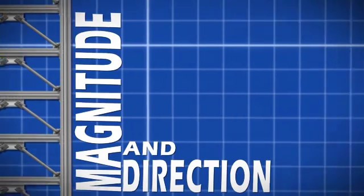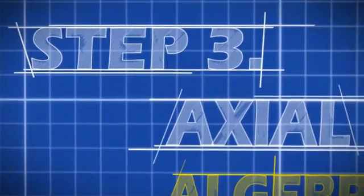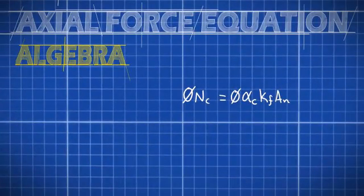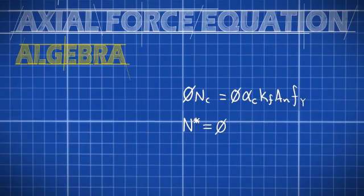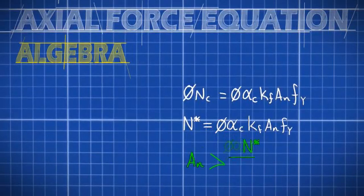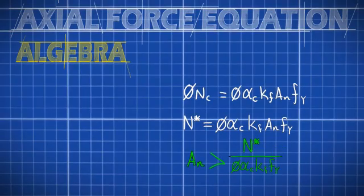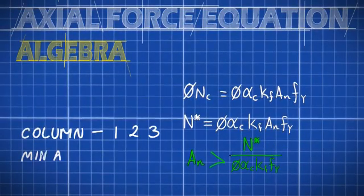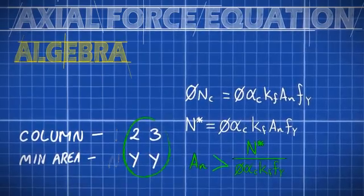Let's take a quick look at the right-hand column being compressed. To ensure that this column is structurally sound, we can utilise an axial force equation. One way to apply this equation would be to rearrange it for the purpose of calculating the minimum cross-sectional area required. Once we've calculated this figure, we now know that any column type with a cross-sectional area less than this is not suitable.